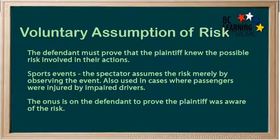The defendant must prove that the plaintiff knew the possible risk involved in their actions. For example, at a sports event, the spectator assumes the risk merely by observing the event. This is also used in cases where passengers were injured by impaired drivers. The onus is on the defendant to prove the plaintiff was aware of the risk.